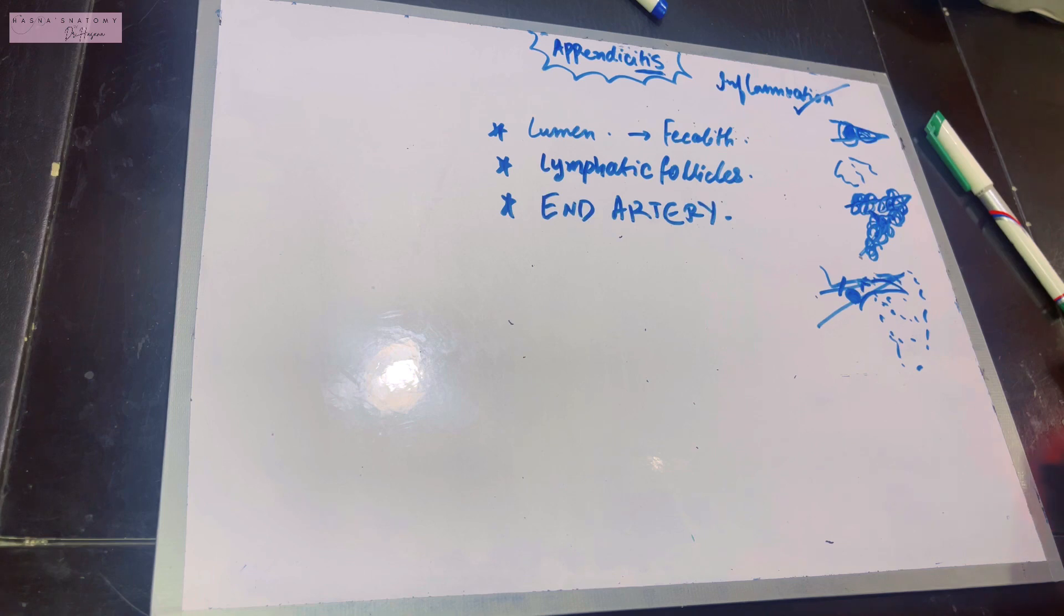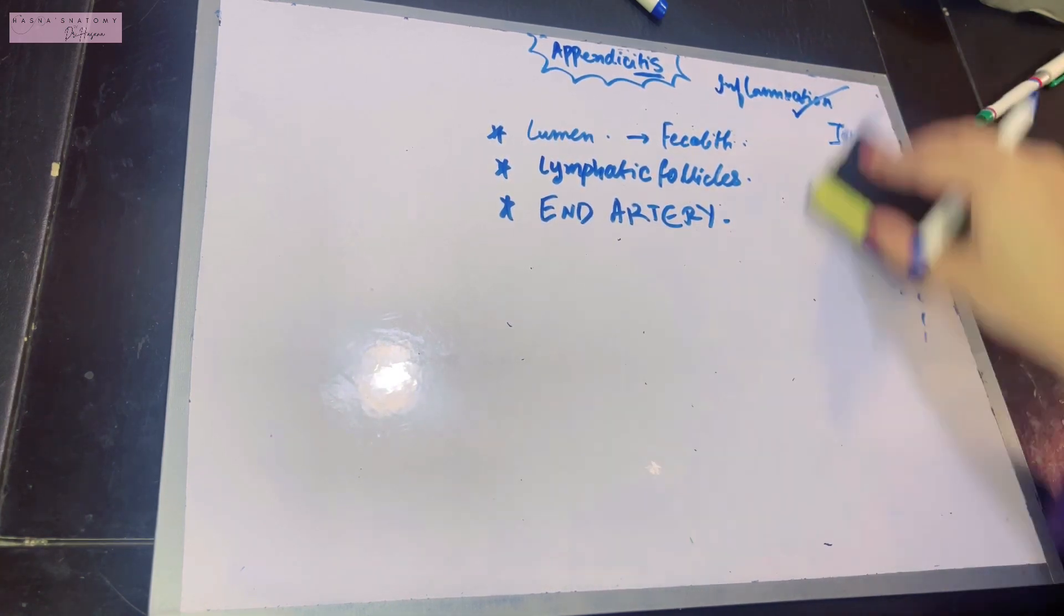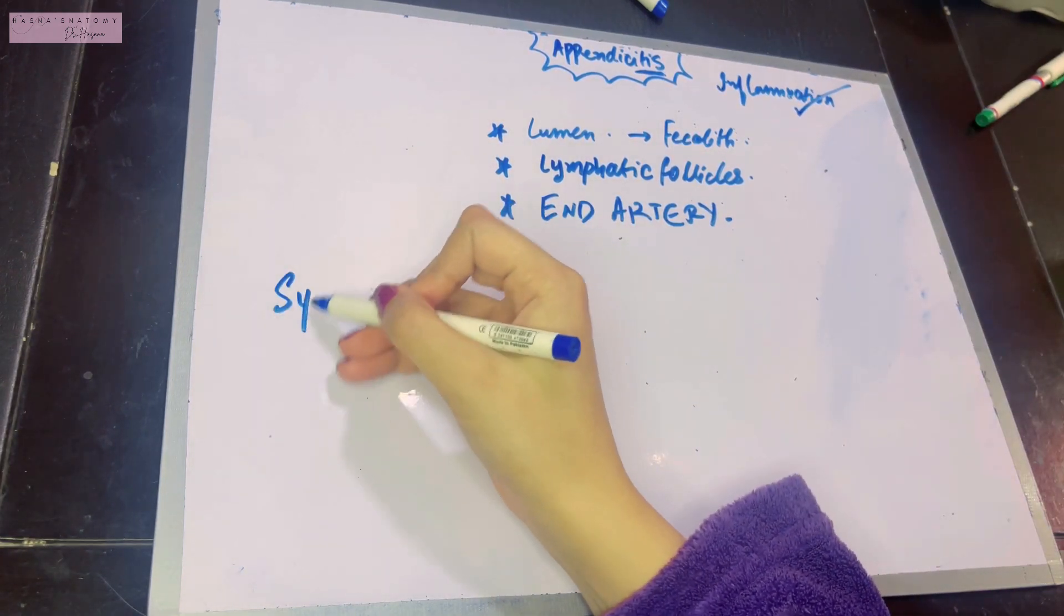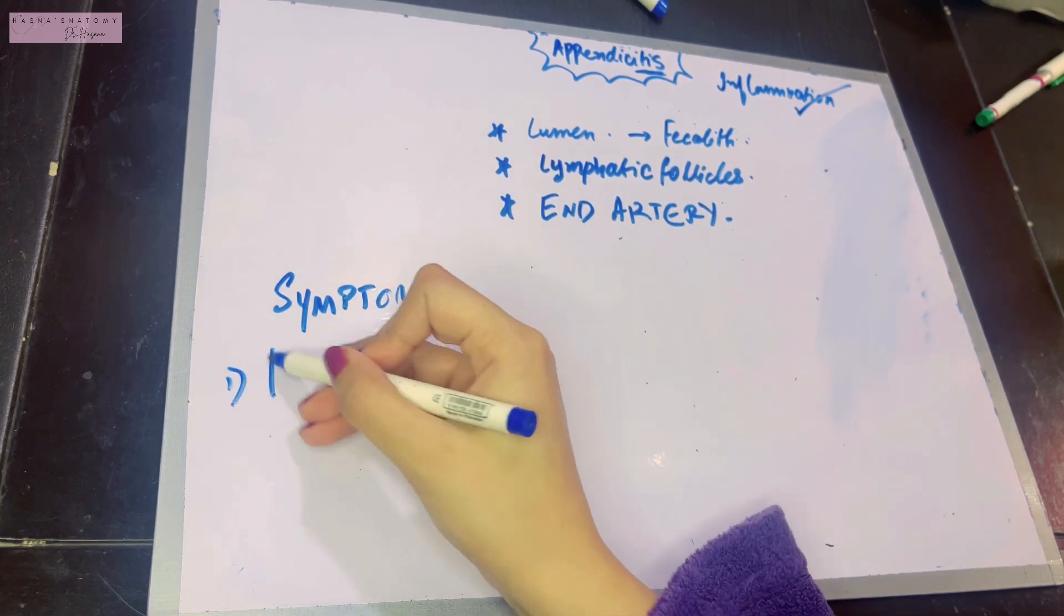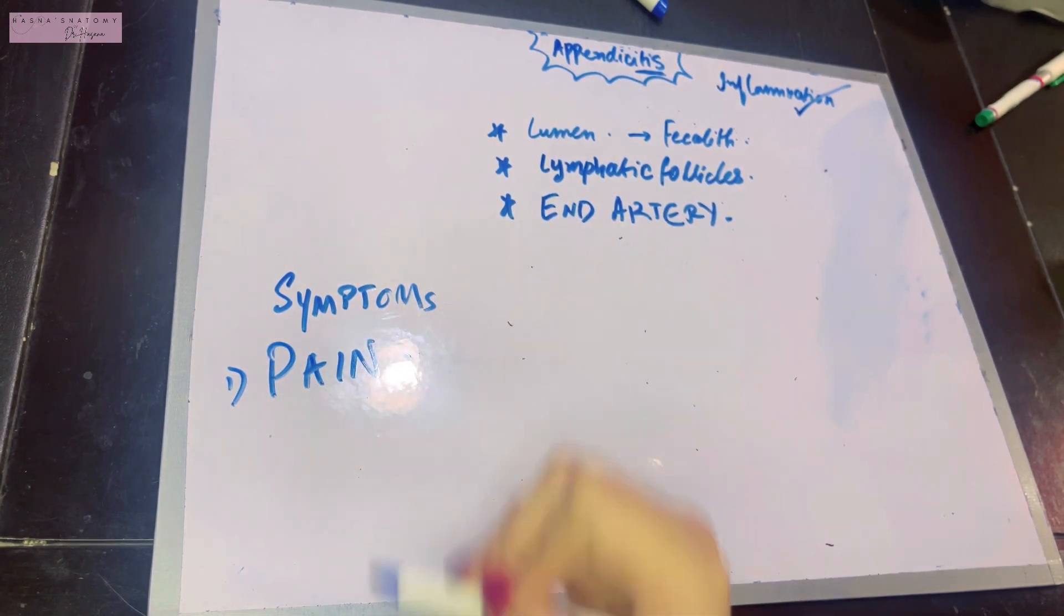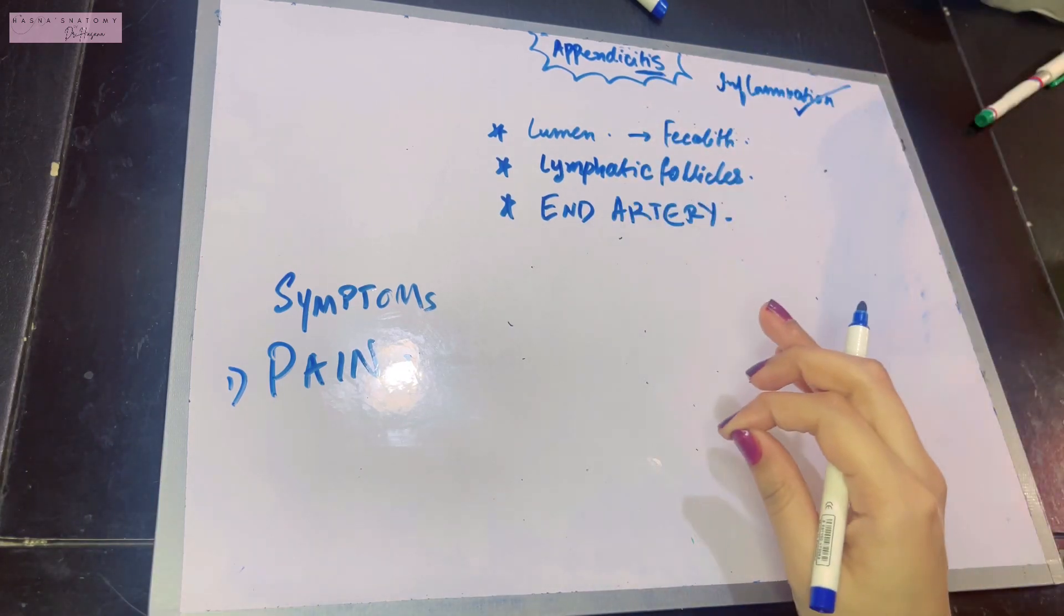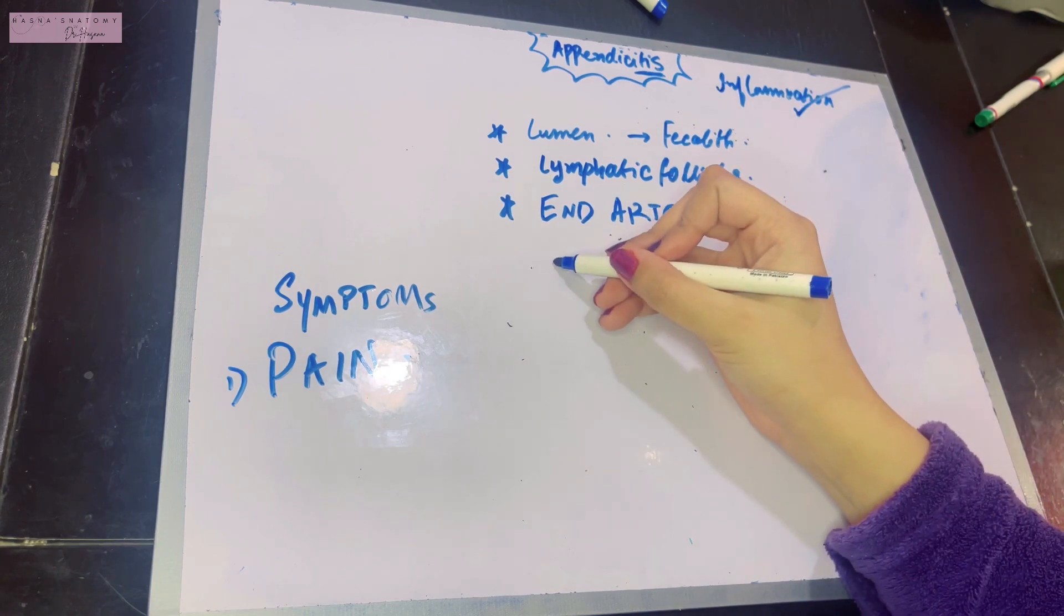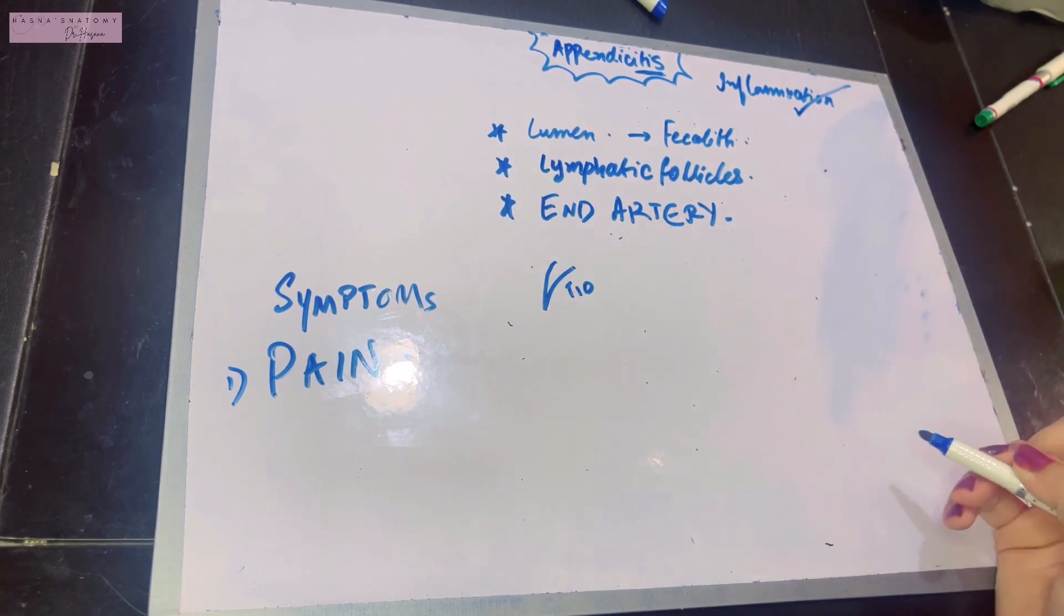These are the factors contributing to appendicitis. Now let's talk about how the patient will present with appendicitis. The symptoms: first is obviously pain. The question of pain—a very important examination question—is where is the pain going to be? We've talked about the feature of appendix being supplied by the T10 segment of the spinal cord.